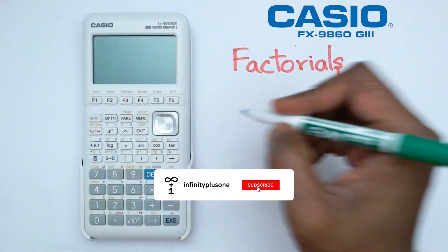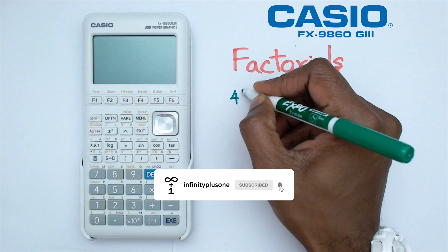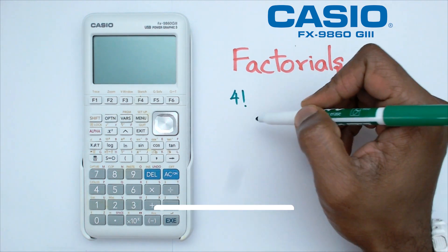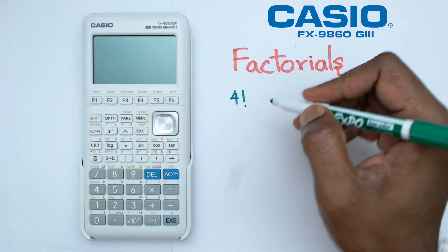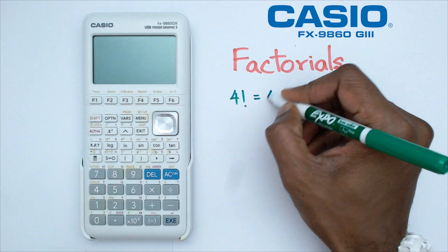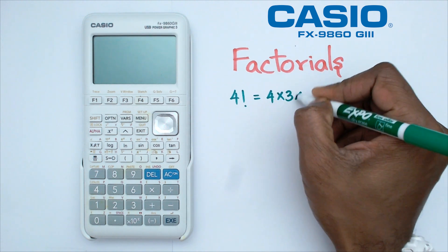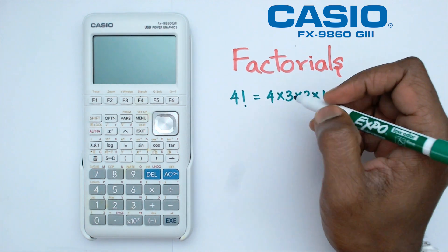Alright, so what are factorials? Now, factorials are when you see a number with a little exclamation mark after it. What it generally means is that all you're really wanting to do is 4 multiplied by 3 multiplied by 2 all the way up to 1.